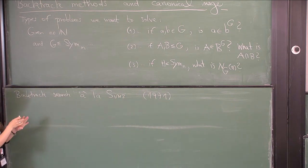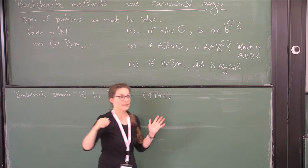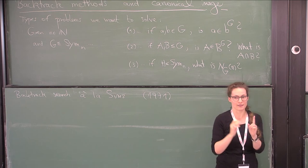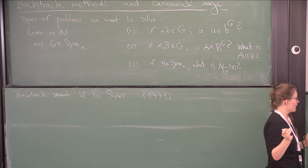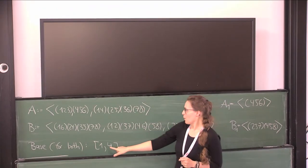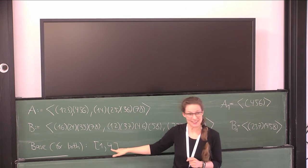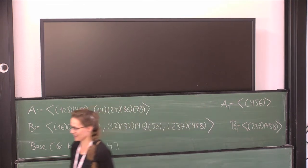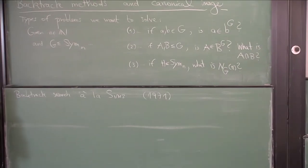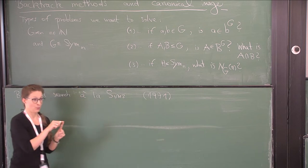Thanks to Melissa and Veronica and Alice who mentioned this. Let's have a base for these two groups: 1, 4 is a base. My example will be short because the base is short, but I can explain some of the principles. I want to search for elements in A intersect B by looking at how group elements act on the base points, so I have a first level coming from the first base point.